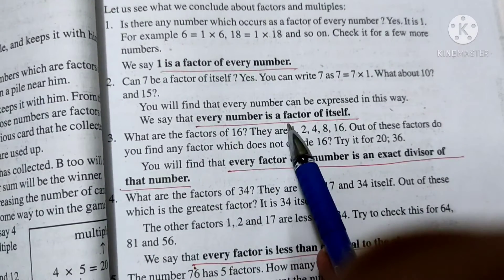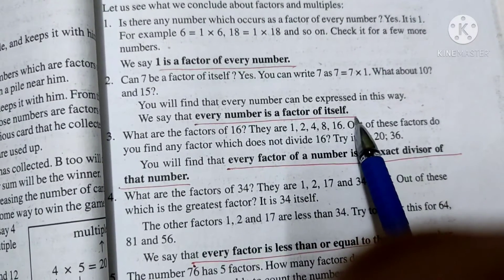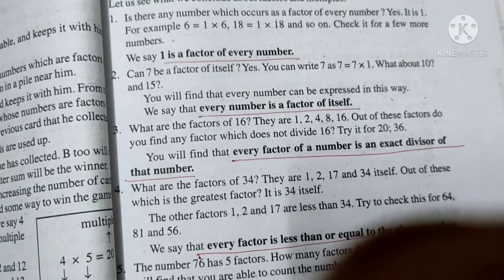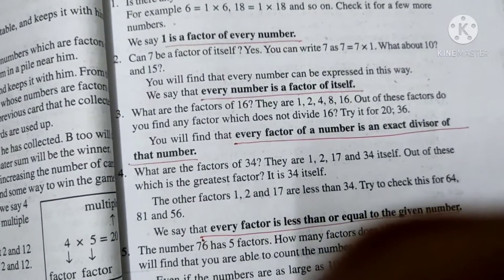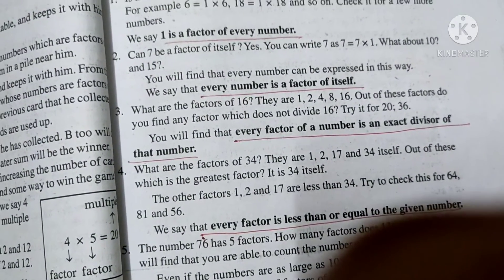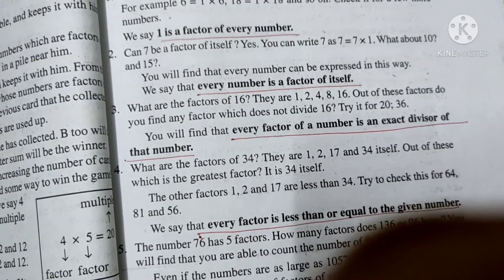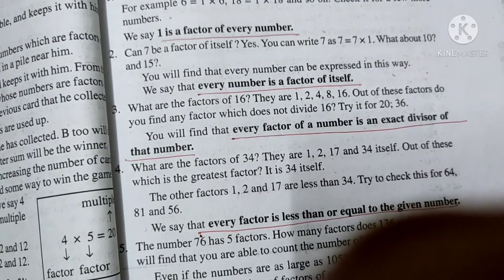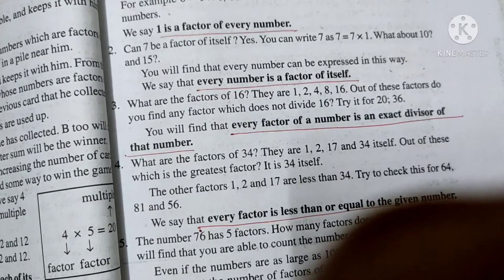Then comes the second point - every number is a factor of itself. Just like we have seen example, that 4 itself is dividing 4 completely. Hence, the remainder was 0 in that case. So every number is a factor of itself.